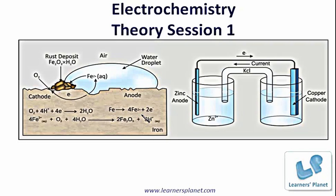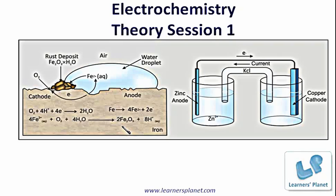Iron is forming Fe²⁺ ions, which means it is getting oxidized, and hydrogen ions are getting reduced. So this is a redox reaction. Electrochemistry correlates the electrical energy and the chemical reactions which are redox reactions in nature.